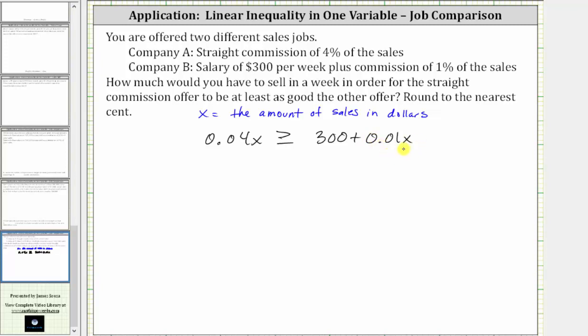To solve the inequality, we first add or subtract to isolate the variable term on one side. Notice right now we have x terms on both sides. Let's undo the plus 0.01x by subtracting 0.01x on both sides.